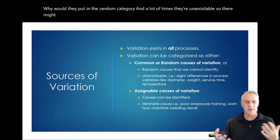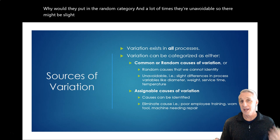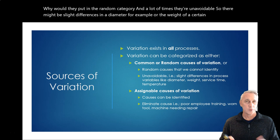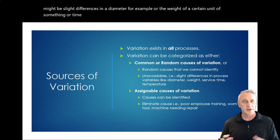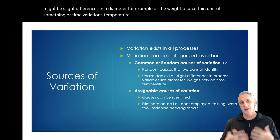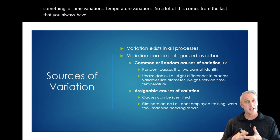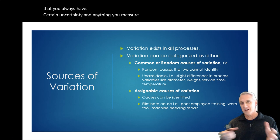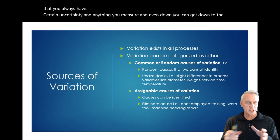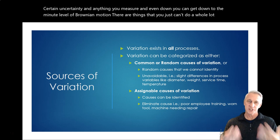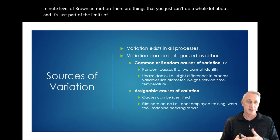So there might be slight differences in a diameter, for example, or the weight of a certain unit of something, or time variations, temperature variations. So a lot of this comes from the fact that you always have certain uncertainty in anything you measure. And even when you get down to the minute level of Brownian motion, there are things that you just can't do a whole lot about. And it's just part of the limits of the physical system you're dealing with.